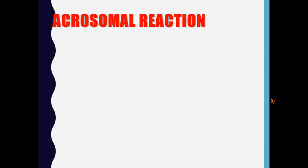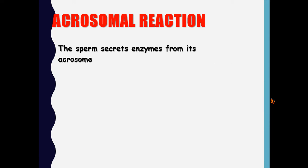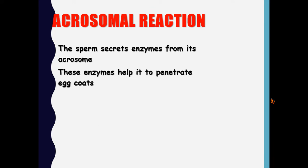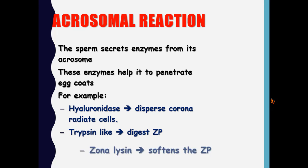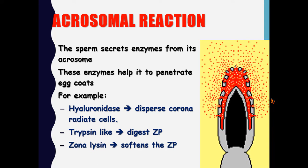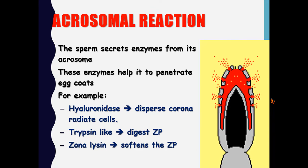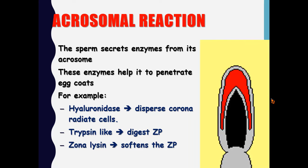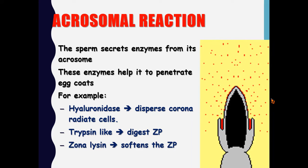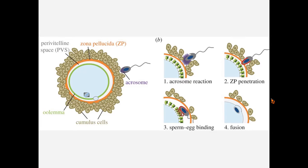Next, we have the acrosomal reaction. The sperm secretes enzymes from its acrosome; these enzymes help to penetrate the egg coats. For example, hyaluronidase disperses the corona radiata cells, a trypsin-like enzyme digests the zona pellucida, and another enzyme called zona lysin softens the zona pellucida. In this animation you can see the acrosome releasing its enzymes, which will digest the layers surrounding the ovum.